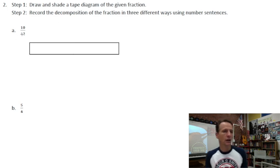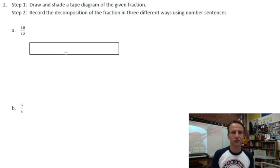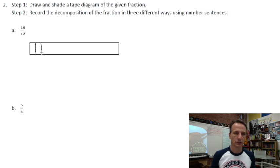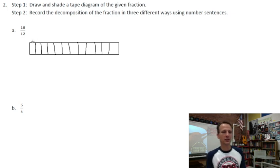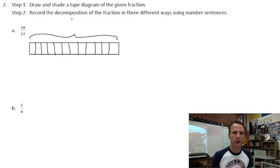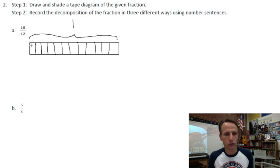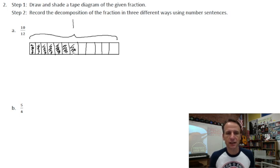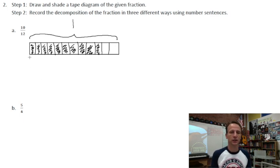I need to draw eleven lines to create twelve partitions — one, two, three, four, five, six, seven, eight, nine, ten, eleven. The whole thing is twelve twelfths — one whole — and I'm shading in ten out of twelve: one, two, three, four, five, six, seven, eight, nine, ten — leaving two unshaded. Ten plus two is twelve, it checks out. This right here is ten twelfths.